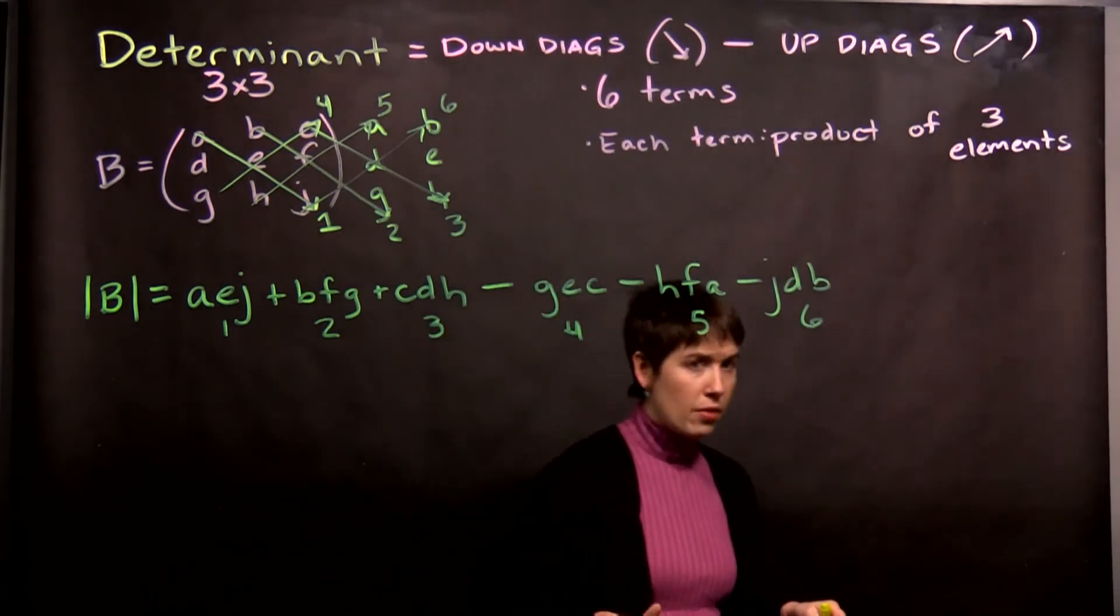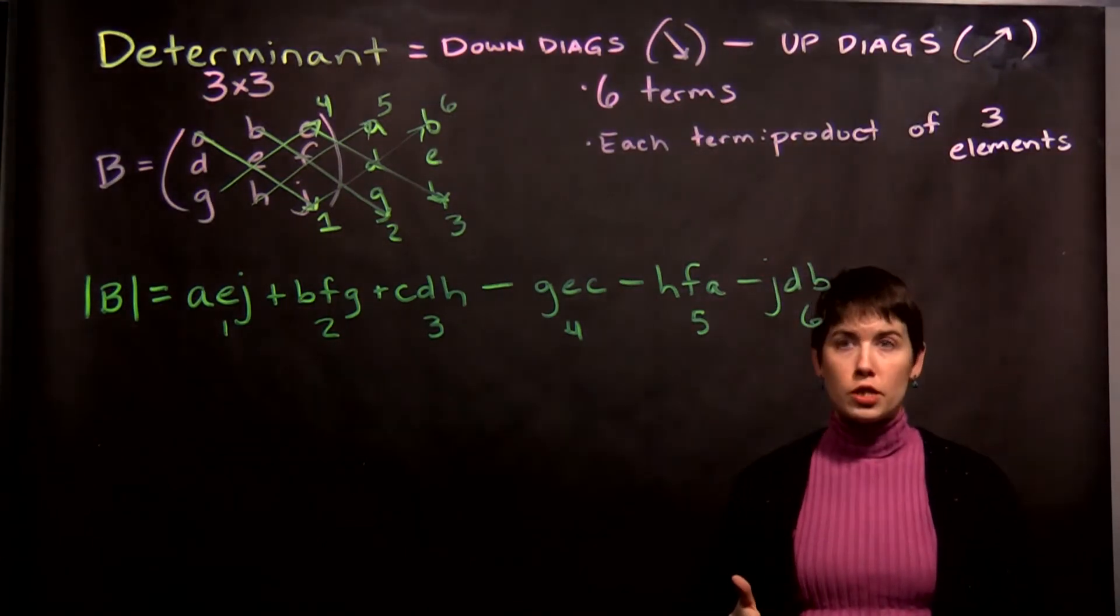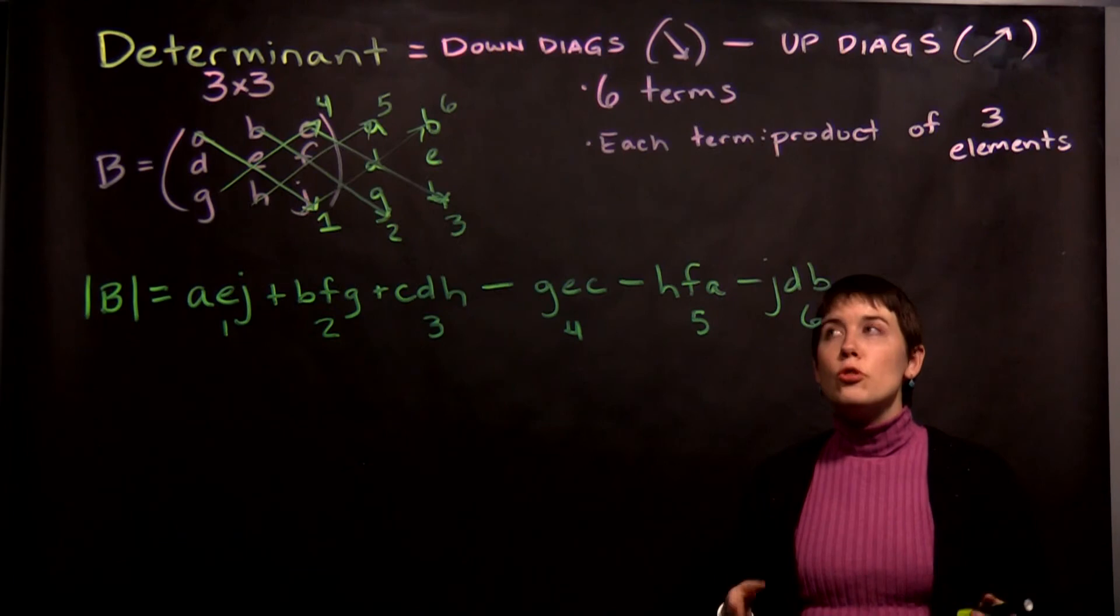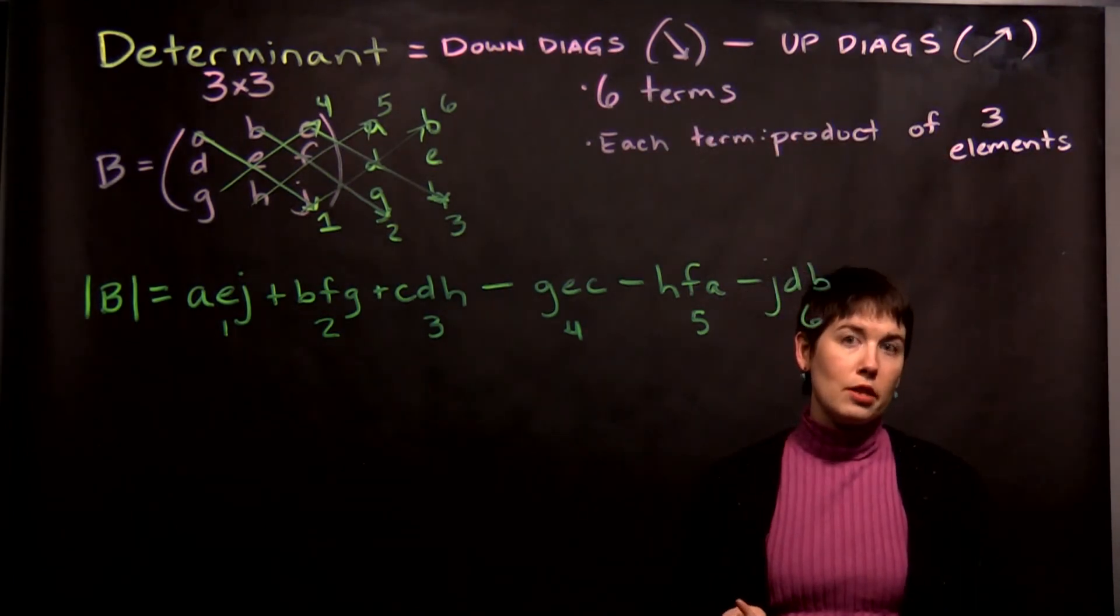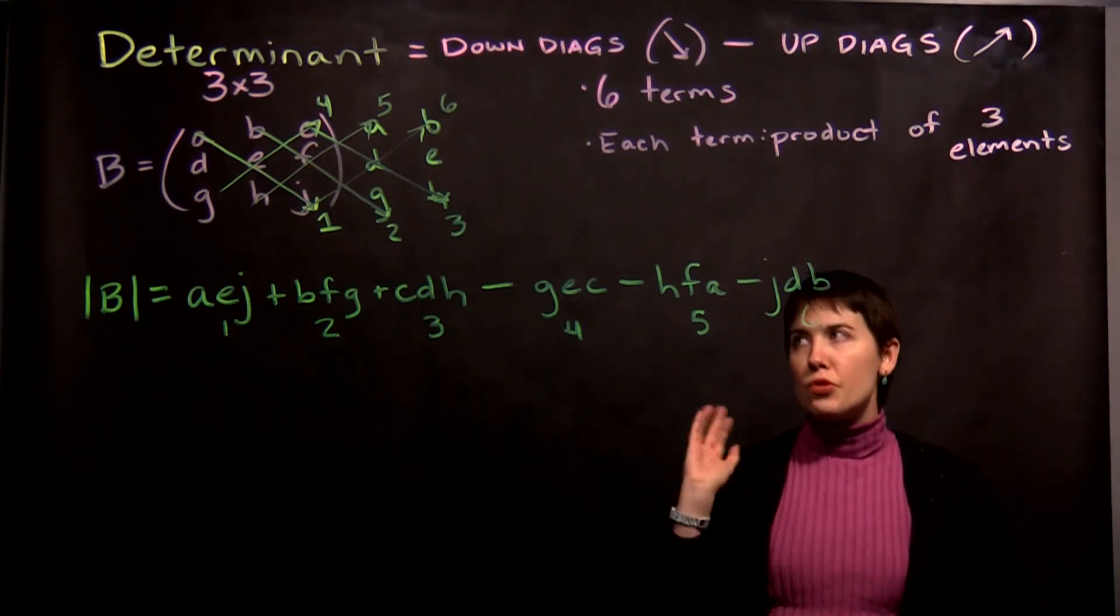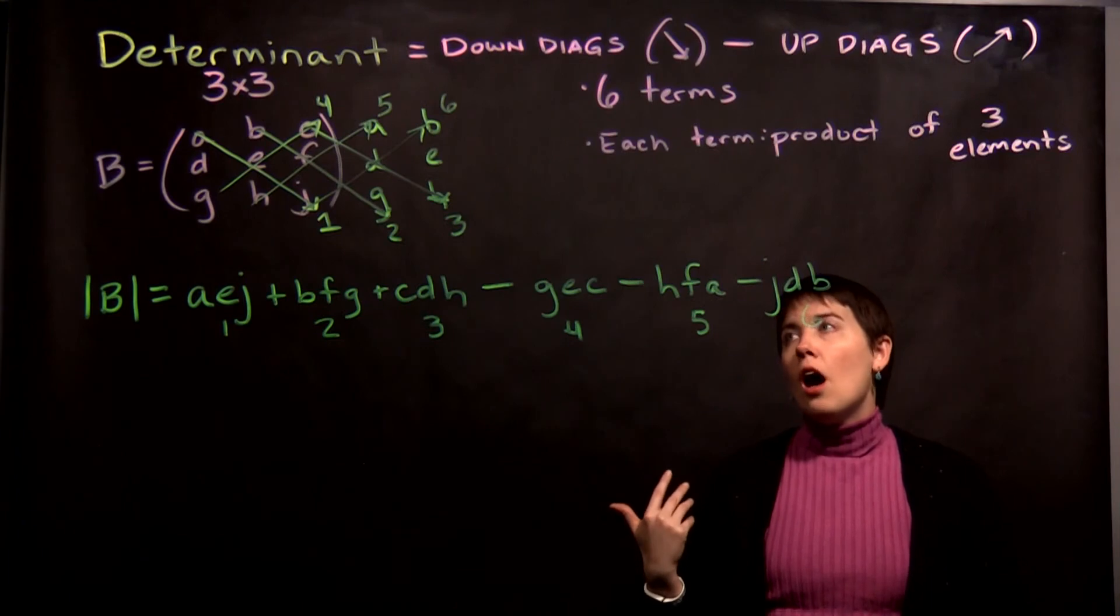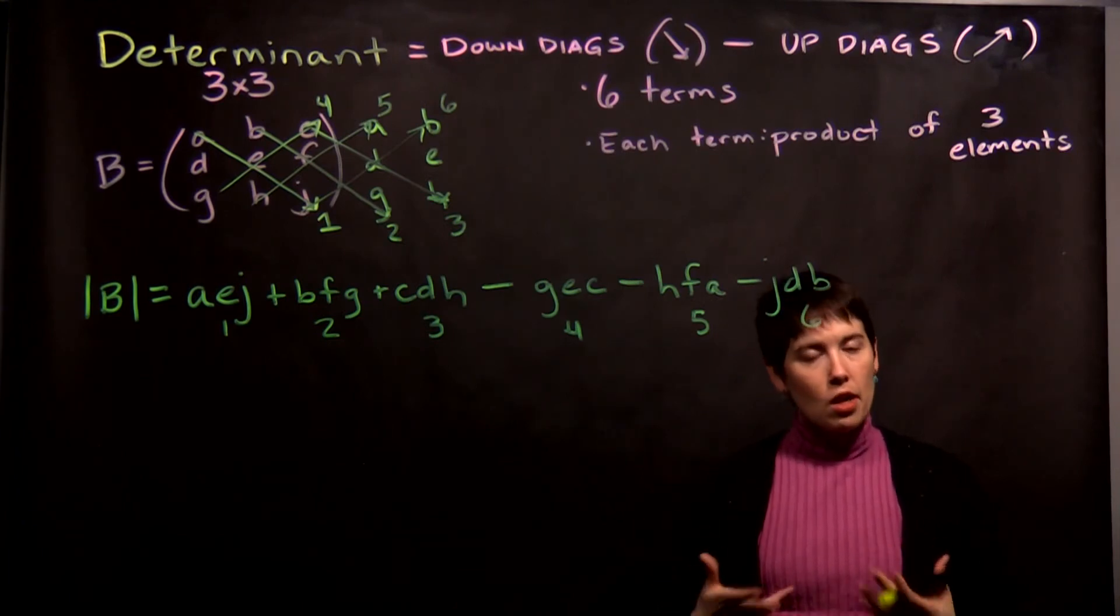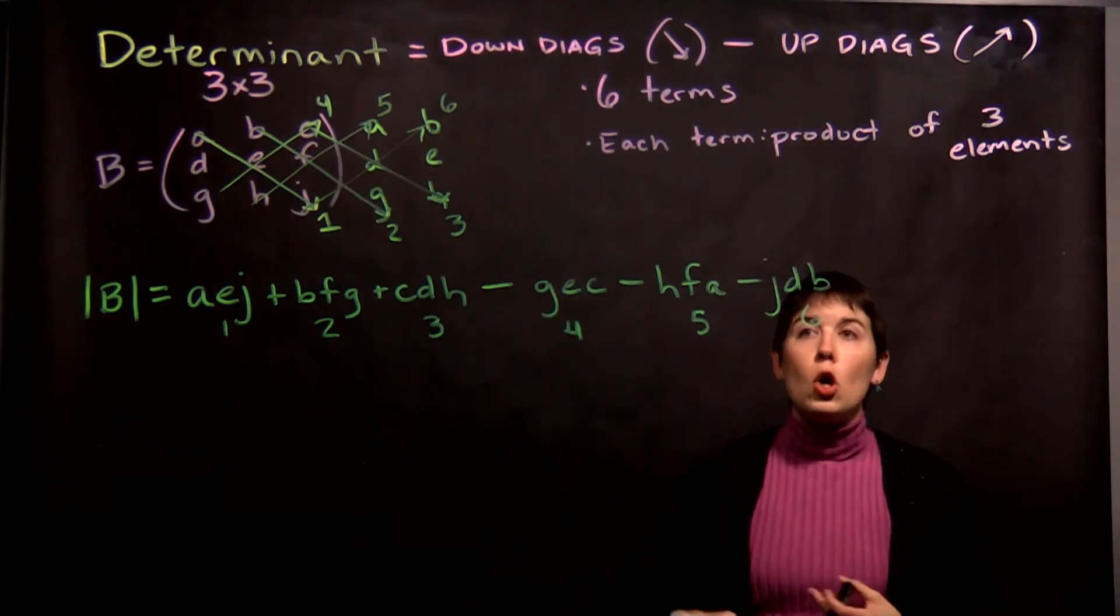There are other methods for calculating the determinants of 3x3 and larger matrices, and you'll notice that this idea of down minus up was also how we calculated our 2x2. This is a general approach, but I think that it works pretty nicely. If you have another technique, that can be okay. Just make sure it's mathematically valid. This will work in all circumstances.